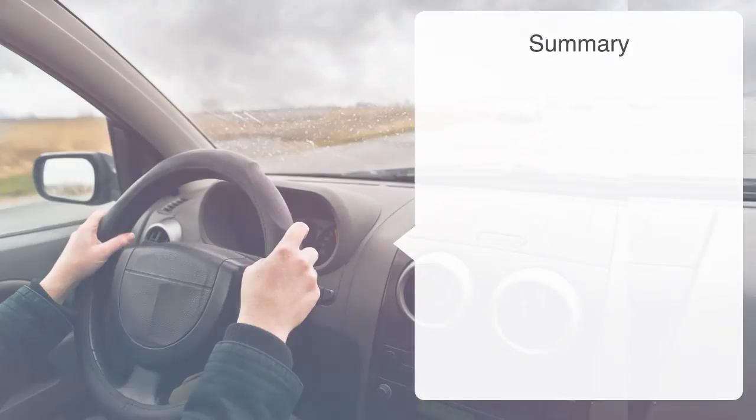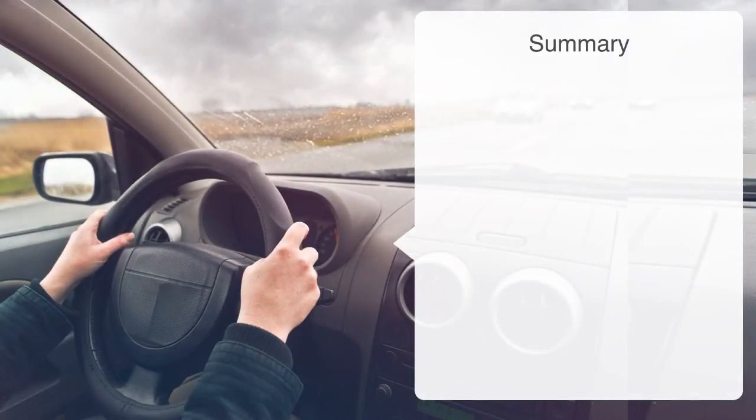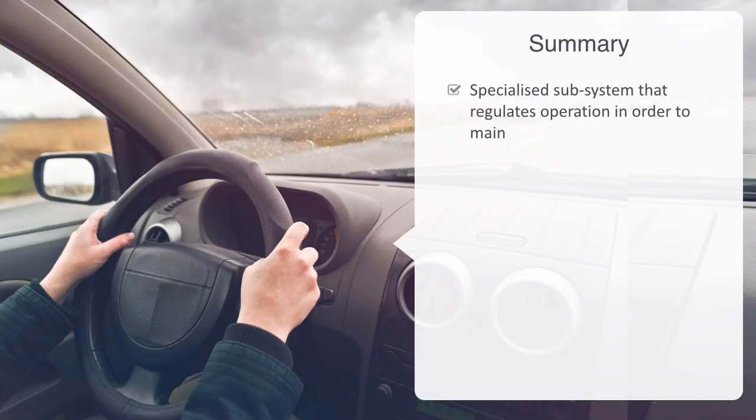In this module, we have covered the basics of regulatory systems as understood by systems theory and cybernetics. We started by defining a control mechanism as a specialized subsystem that is designed to monitor and regulate the behavior and operation of the broader system it is part of in order to maintain homeostasis and functionality in the face of perturbation from its environment.